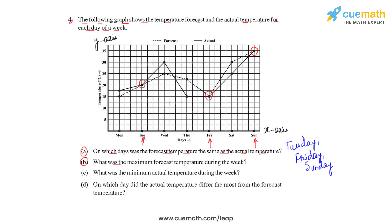Moving on to question B, we need to find the maximum forecast temperature during the week. The forecast temperature is represented by the dotted line, and its maximum occurs on Sunday, where we see the greatest increase. Reading the y-axis at that point, the maximum forecast temperature is 35 degrees Celsius.